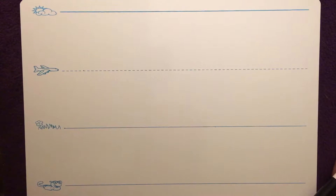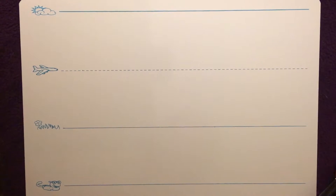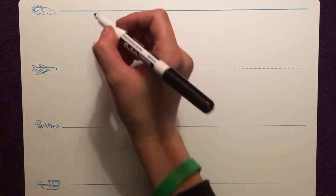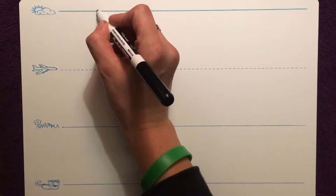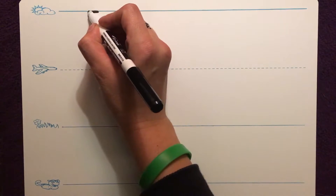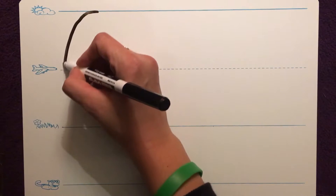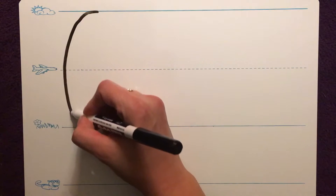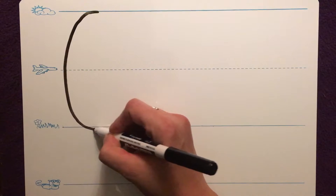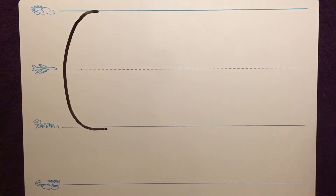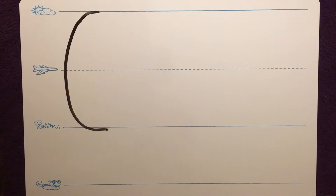Uppercase C starts on the skyline. Put your marker on the skyline, fly back on the skyline, go down and around to the grassline, and curve on the grassline. C, cat, kuh.